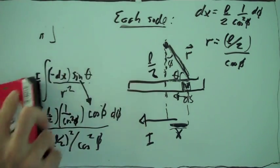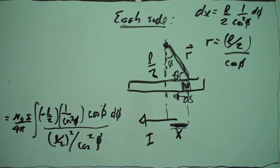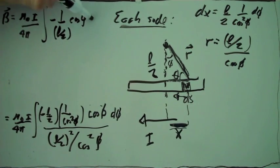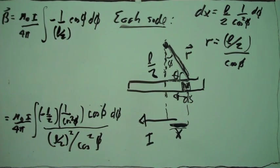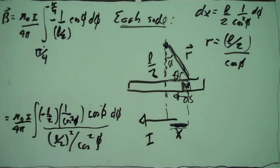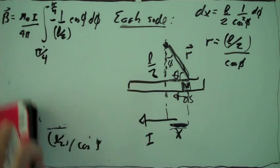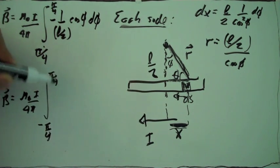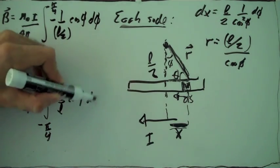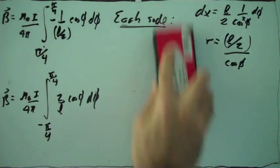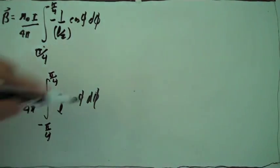Now we have the expression for the magnetic field at the center of the loop produced by only this one side of the loop. The integral goes from phi equals negative pi over 4 to pi over 4, since we're integrating over the length of one side. We switch the limits of integration by multiplying the whole thing by negative 1. We have this integral, and 2 over L is a constant that we can take out of the integral.